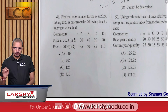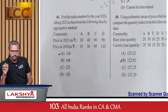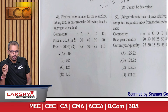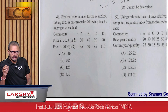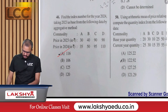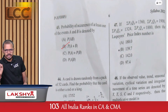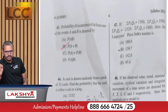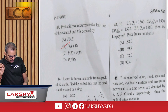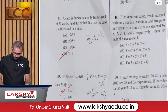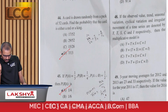Question 46: Find the index number for 2024 taking 2023 as base year using the aggregative method. Commodities A, B, C, D with 2023 prices 30, 40, 90, 90 and 2024 prices 35, 50, 95, 110 — option A. Question 47: Given Σp₀q₀ = 1360, Σpₙq₀ = 1900, Σp₀qₙ = 1324, Σpₙqₙ = 1880, find Laspeyre's price index number — option B.